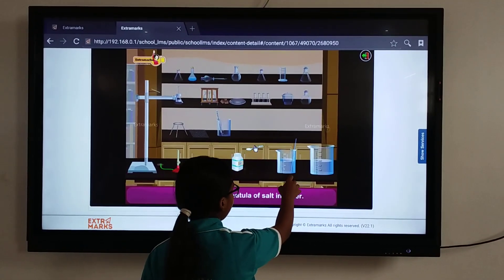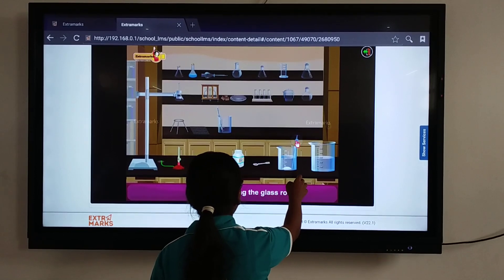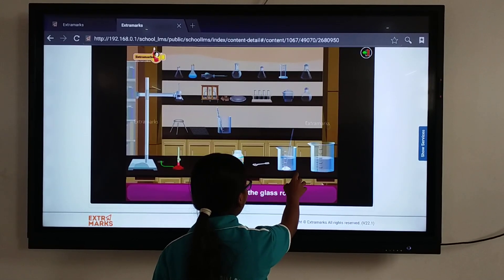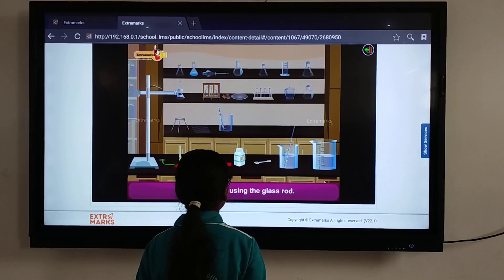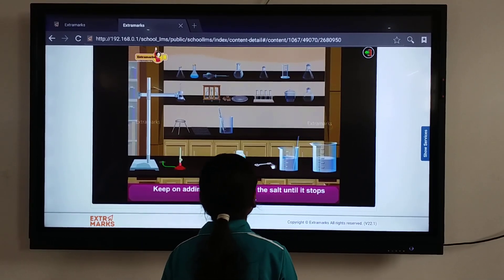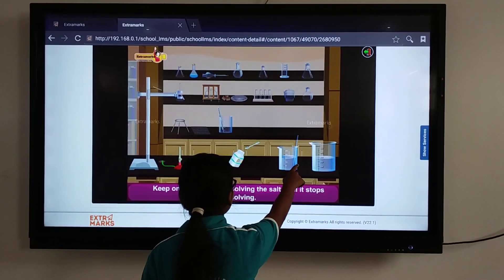Add one more sample of salt in water. Dissolve it using the glass rod. Continue dissolving the salt until it is dissolved.